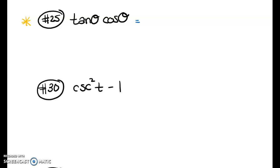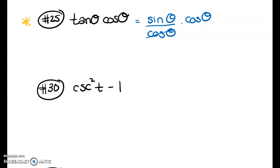Because I don't know how tangent and cosine directly relate, I'll write tangent as sine over cosine. Now I have (sine/cosine) × cosine, and you can clearly see the cosines cancel out, leaving just sine.